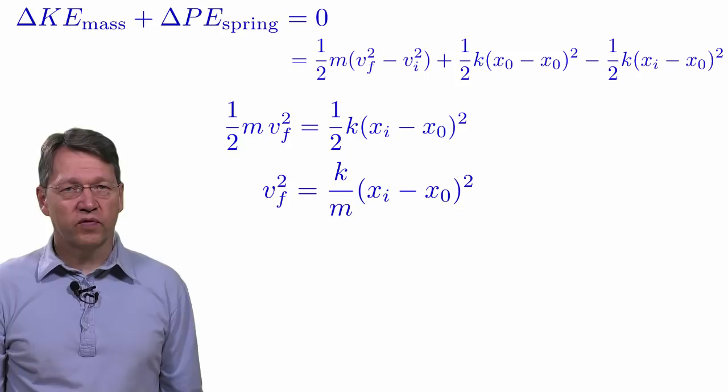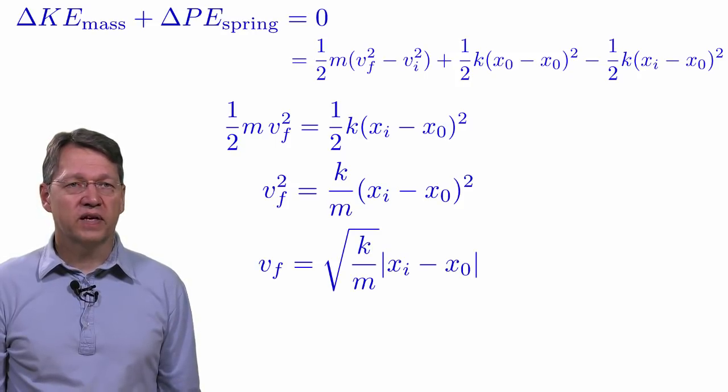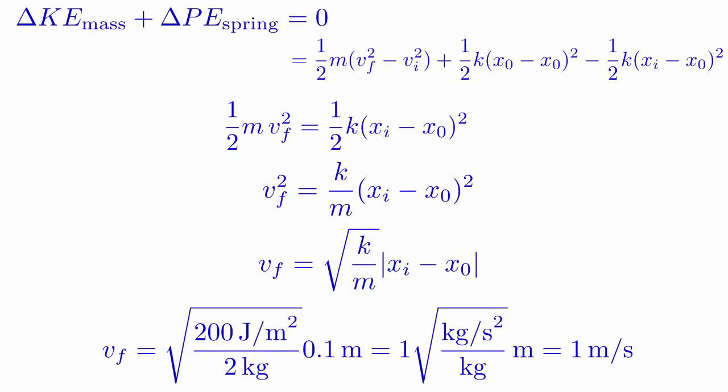We can solve this equation for v_final and find that it equals the square root of k/m times the absolute value of (x_initial - x0). We can now plug in the numbers to get the answer.